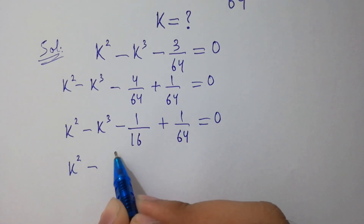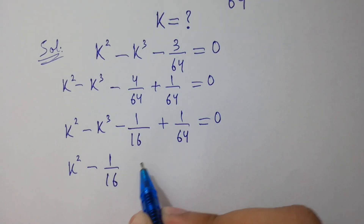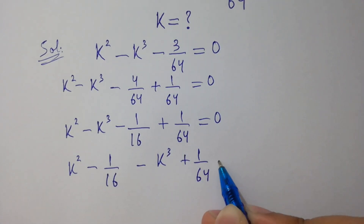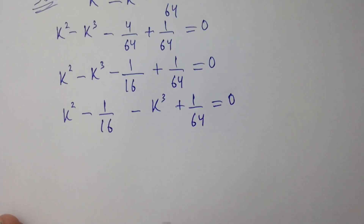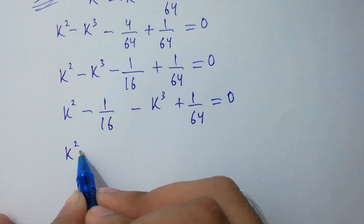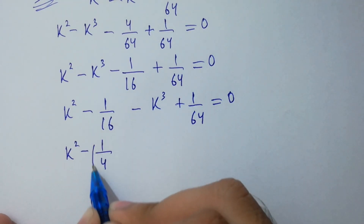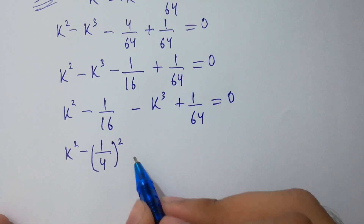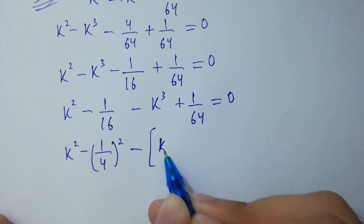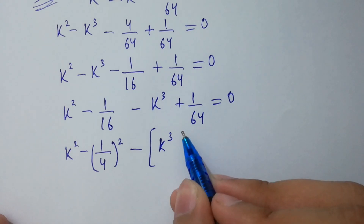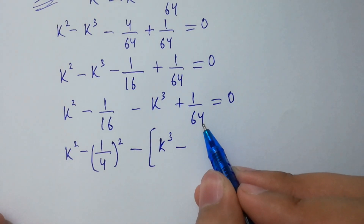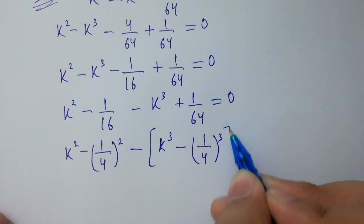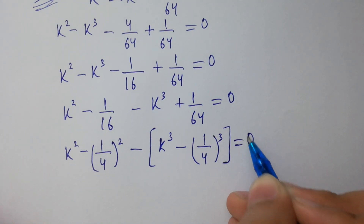This gives us k squared minus 1 over 16, minus k cubed plus 1 over 64, equal to 0. Here 1 over 16 can be written as 1 over 4 squared, and 1 over 64 can be written as 1 over 4 cubed, equal to 0.